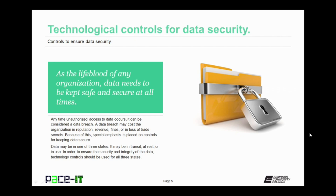Something to keep in mind is that data may be in one of three states. It may be in transit, as in it's going from one system to another system. It may be at rest, so that would be when it's on the storage media. Or it may be in use, as in it's being used in an application. In order to ensure the security and integrity of the data, technology controls should be used for all three states.